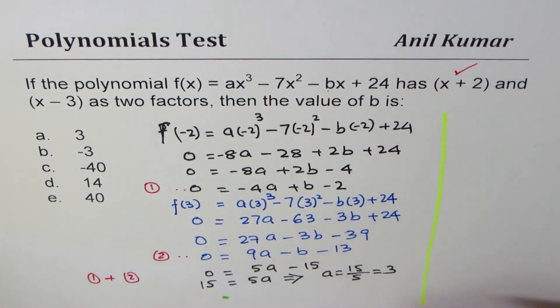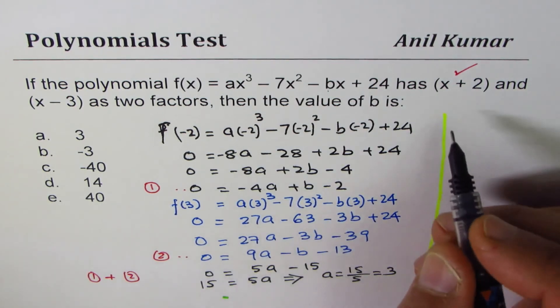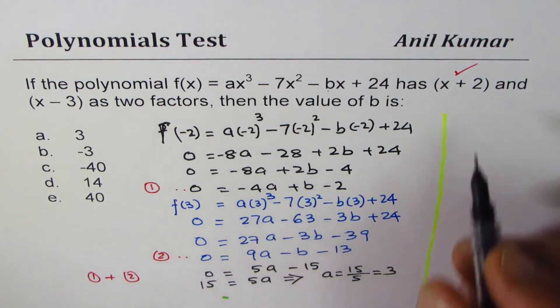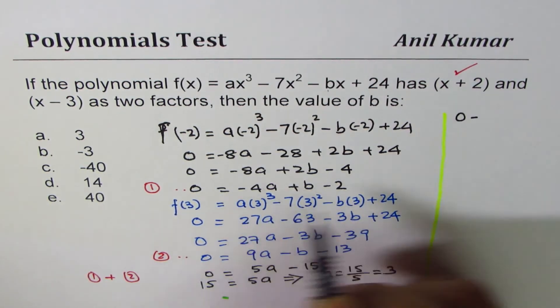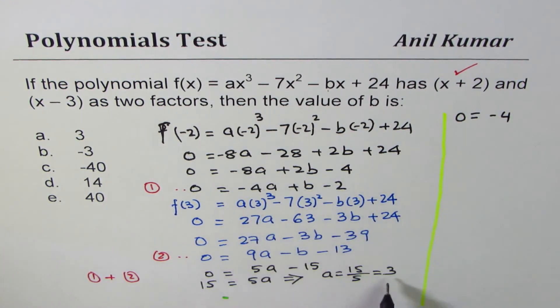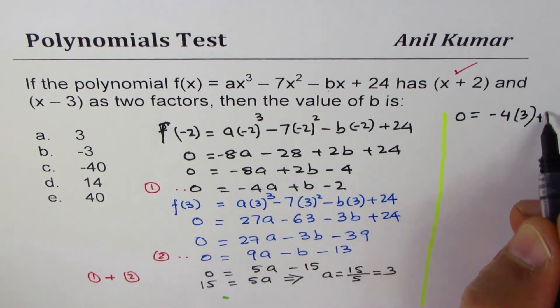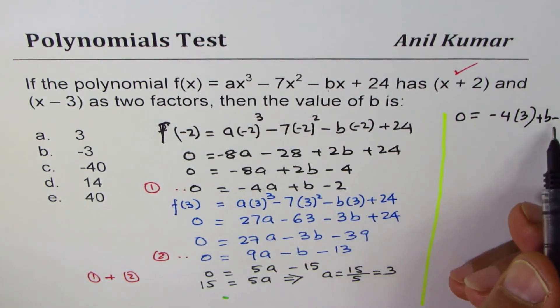which is 3. Once we get the value of a, we can get the value of b also, using any one of these equations, correct? So, let's use equation number 1, which is, let me rewrite this, 0 = -4a, a is 3 for us, we'll write 3 here,